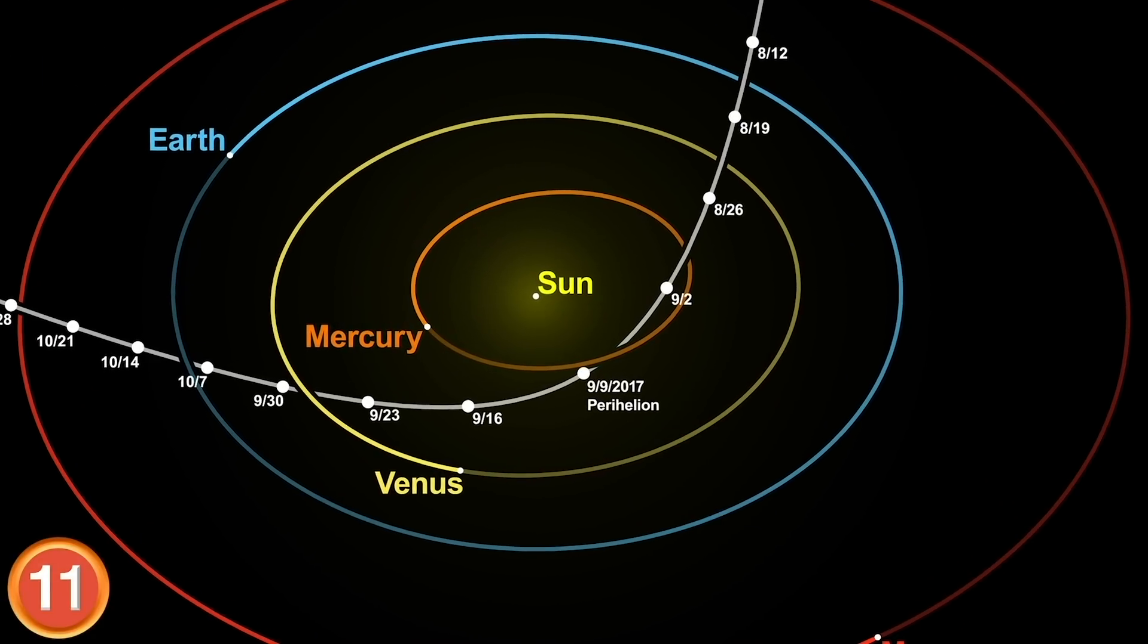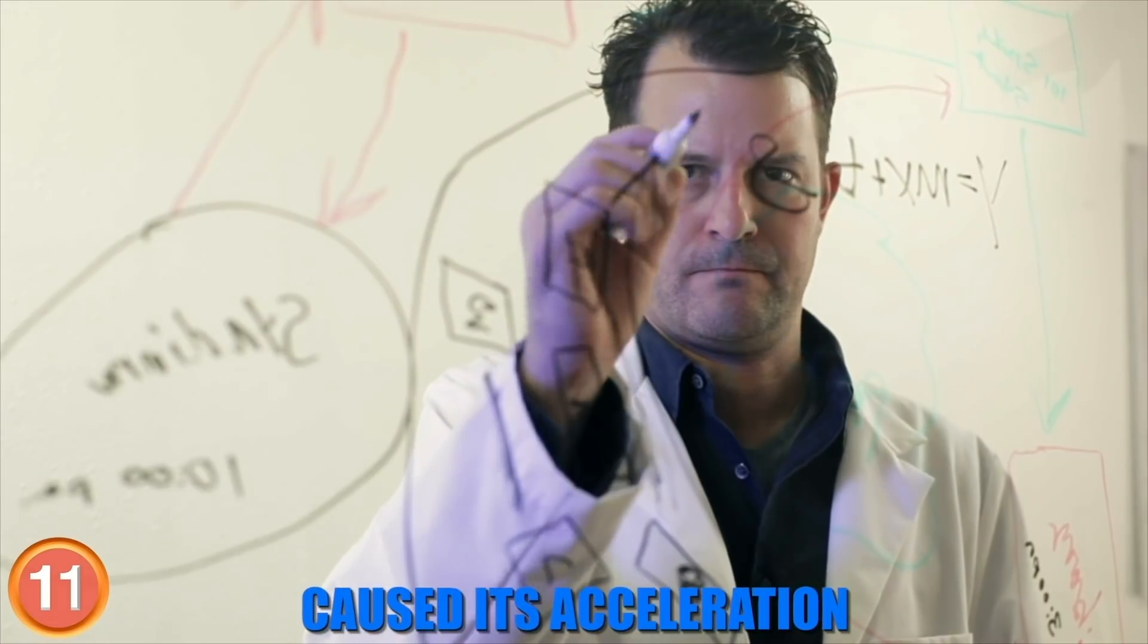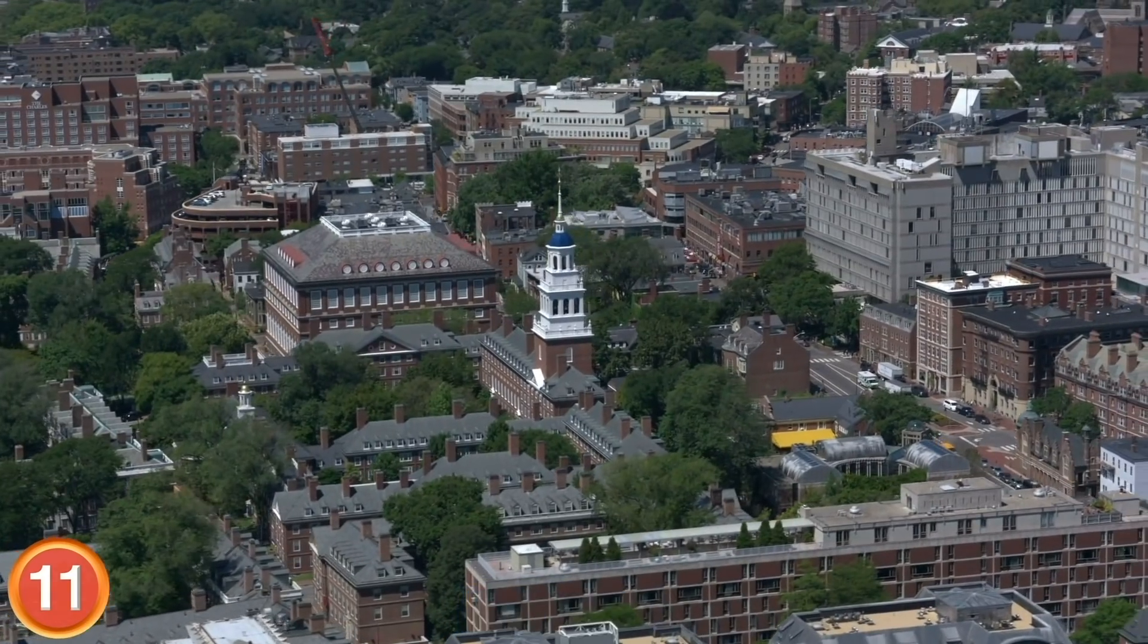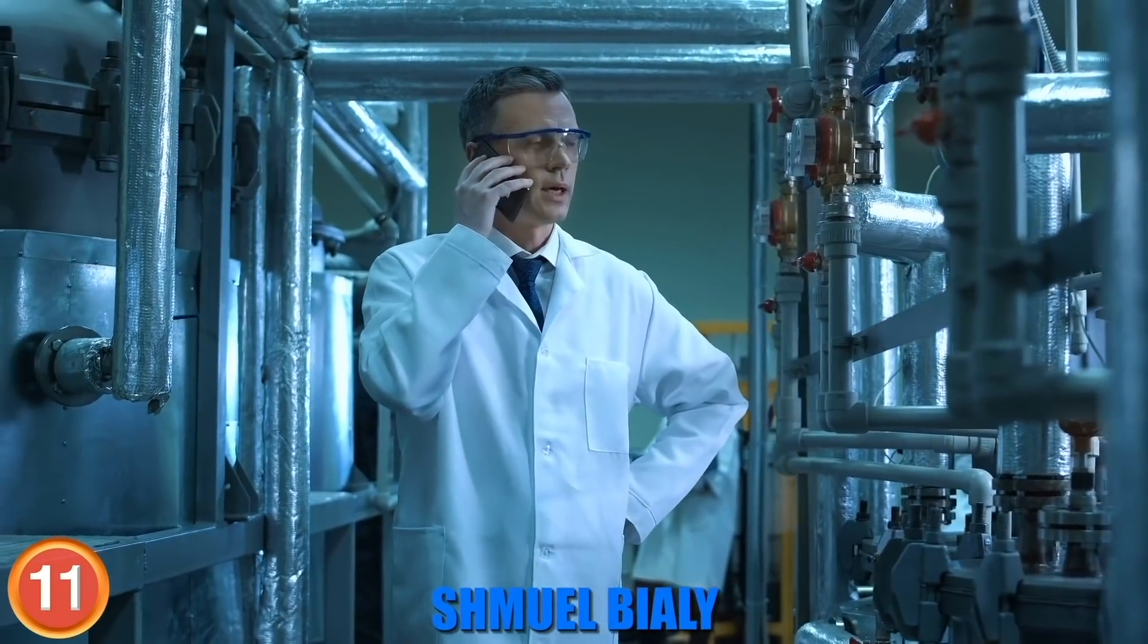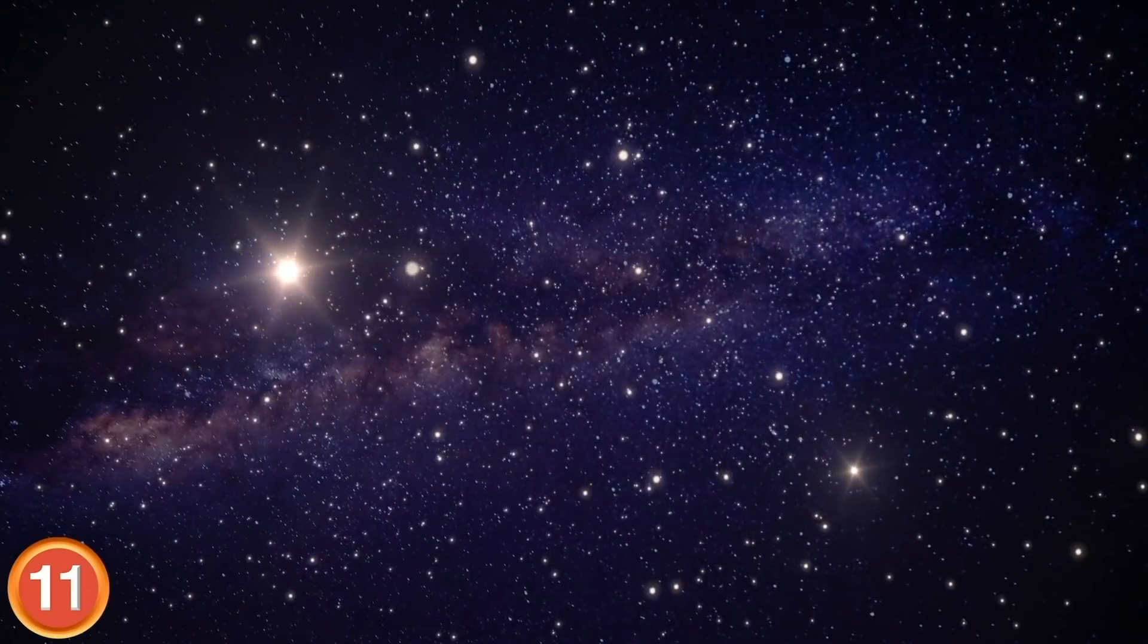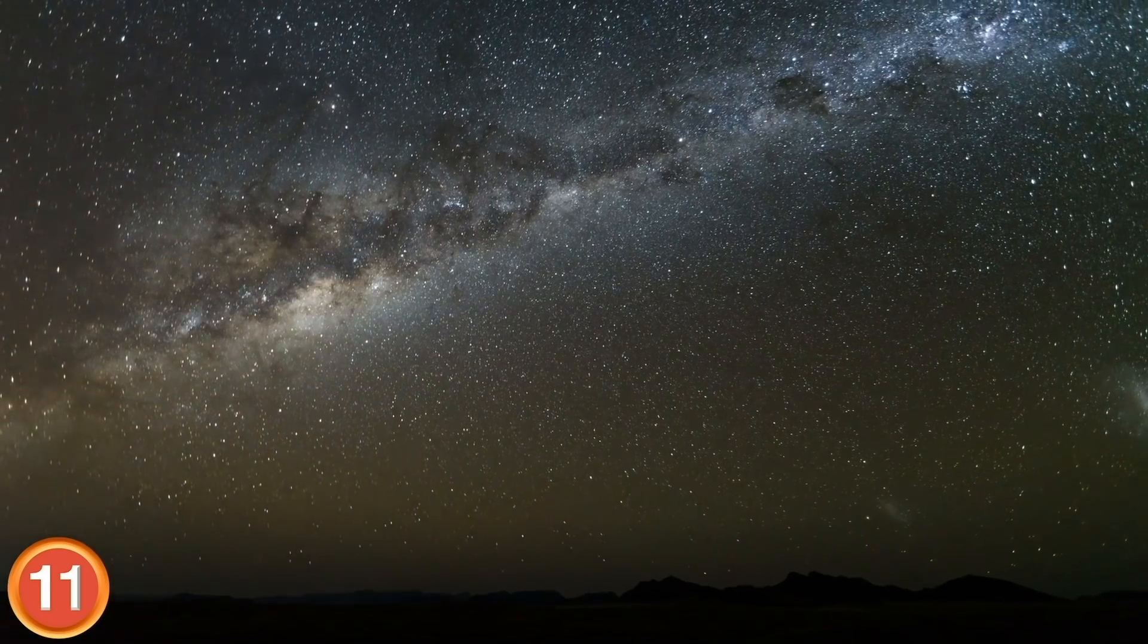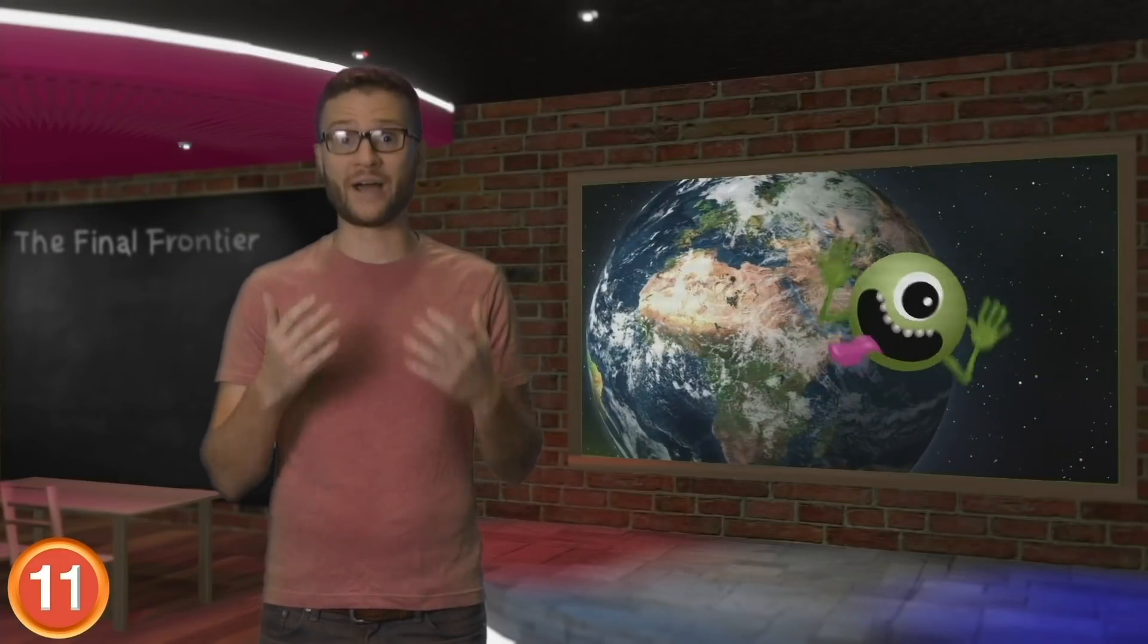Astronomers have no clue where Oumuamua came from or what caused its acceleration. Avi Loeb, the chairman of Harvard's astronomy department and his post-doctoral fellow Shmuel Bialy suspect that Oumuamua may be a fully operational probe sent intentionally into Earth's vicinity by an alien civilization. The aliens have found us. Well, there goes the neighborhood.